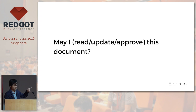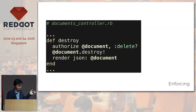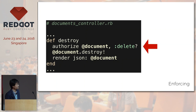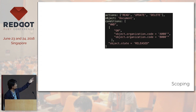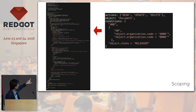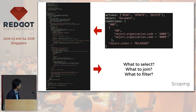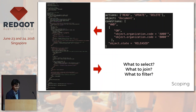After we evaluate the condition tree, we can use Pundit or CanCan to enforce. For example, if a request comes in like 'may I read, update, or approve this document?', you can use authorize code like this. If you may not, then it will be rejected and returns a 403. For scoping — 'give me all the documents that I can read' — this is a bit harder. I had to create a parser for this. After processing the activities, the parser returns what to select, what to join, and what to filter, so your controller has an easier time selecting all the necessary documents for the particular user.